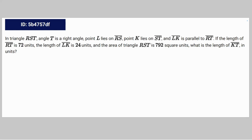In the triangle RST, angle T is a right angle, point L lies on RS, point K lies on ST, and LK is parallel to RT. If the length of RT is 72 units, the length of LK is 24 units, and the area of triangle RST is 792 square units, what is the length of KT?